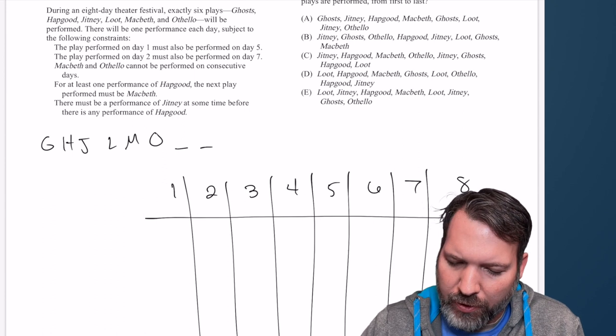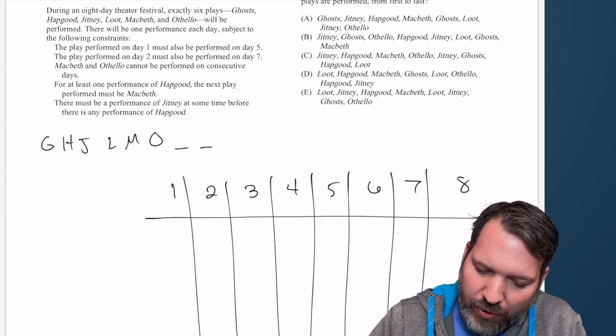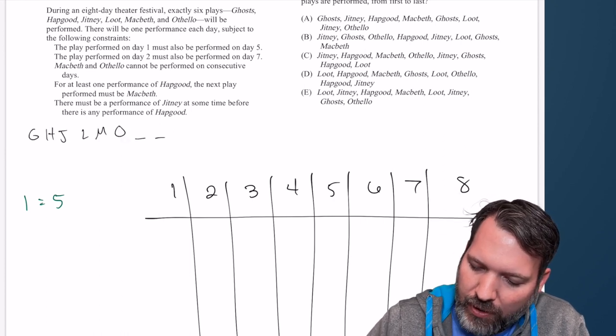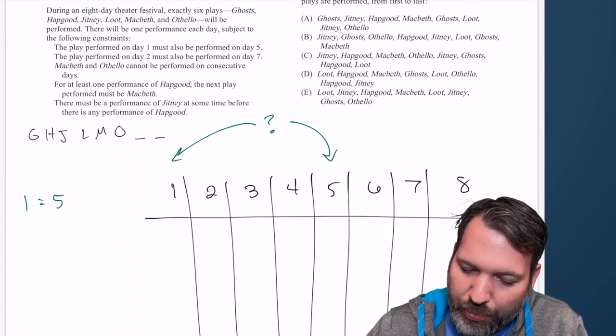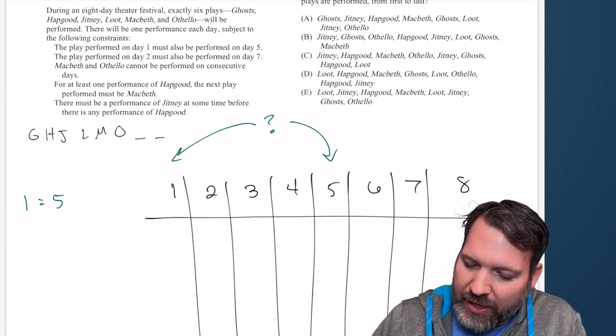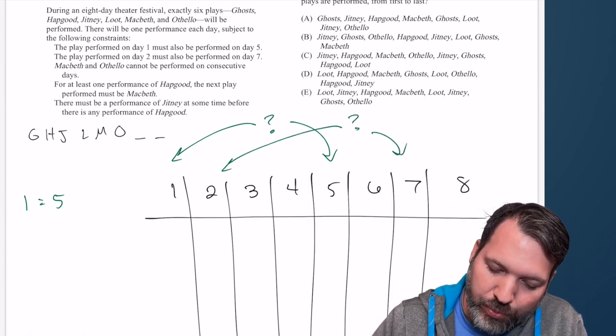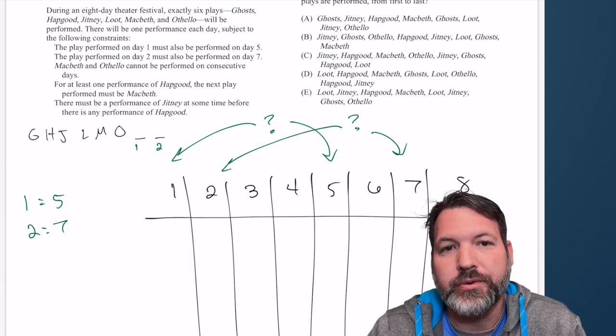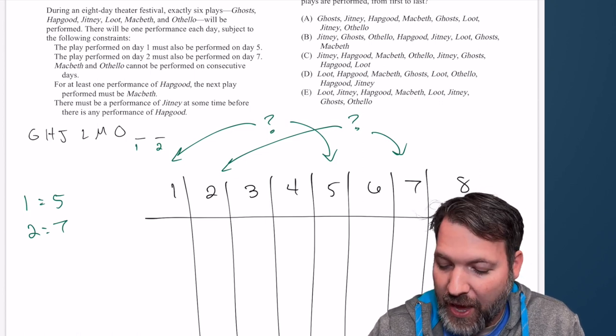Let's get into the clues and see if we can figure out what we end up reusing. The play performed on day one must also be performed on day five. So I'm going to go right up here and say, I don't know what it is, but something that gets performed on day one will also get performed on day five. The play performed on day two must also be performed on day seven. I'm just going to do the same thing here.